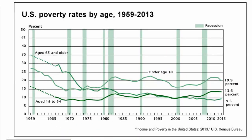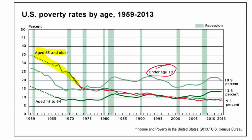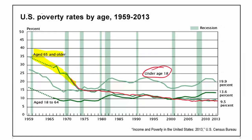A graph on poverty rates by age from 1959 through 2013 shows that even though people 65 and older used to have higher poverty rates, today that age group is the least likely to be in poverty. People under age 18 — children — are the most likely group to be in poverty by age.